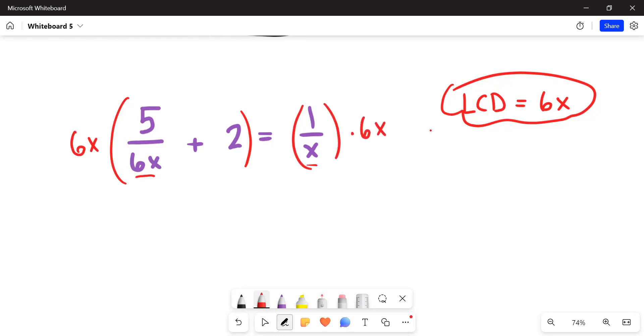Now we have to be careful in some instances when it might cause us to multiply by zero, but that's not going to be a factor here. When we distribute, the six x's will cancel out there, we'll just get a five. And the second one will get 12x. On the right hand side, notice as the x's cancel out, we're just left with six.